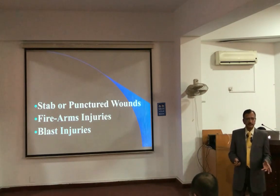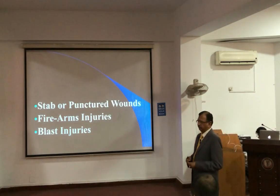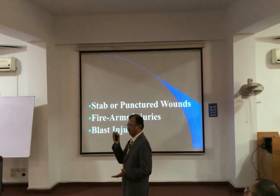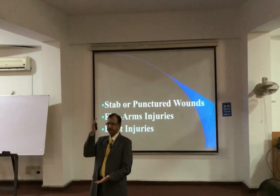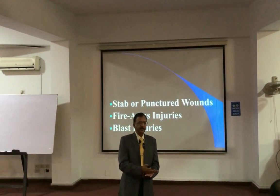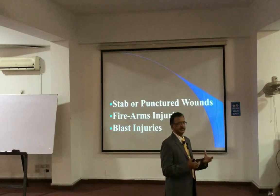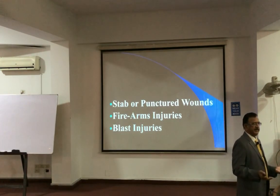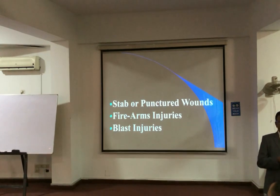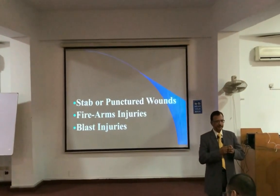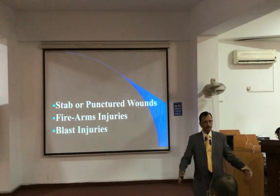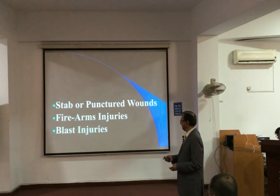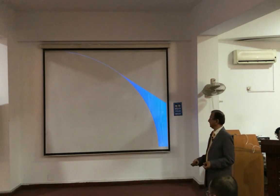Then blast injuries — blast injuries are a classical example. When we discuss the components of trauma, we say that unless the weapon comes in contact it cannot produce damage, but the blast is an exception. There is no physical contact, yet the injury occurs because of the tremendously expanding pressure waves that travel through the body and cause damage. So blast injuries are also a special type of trauma.